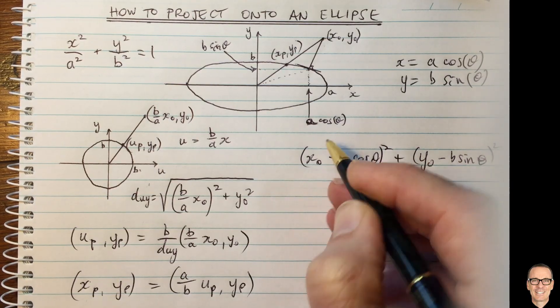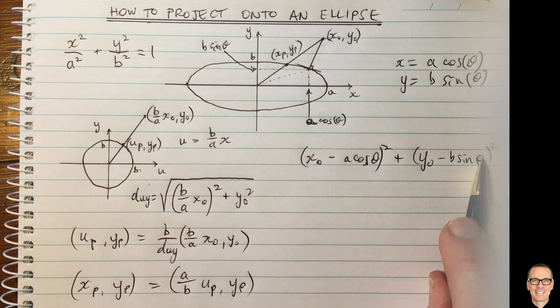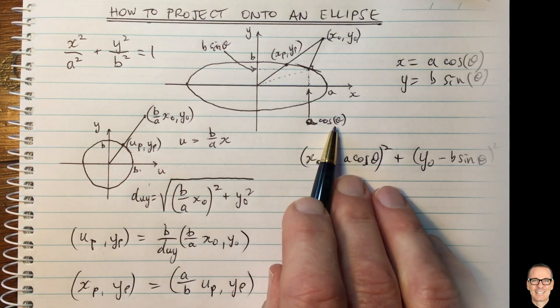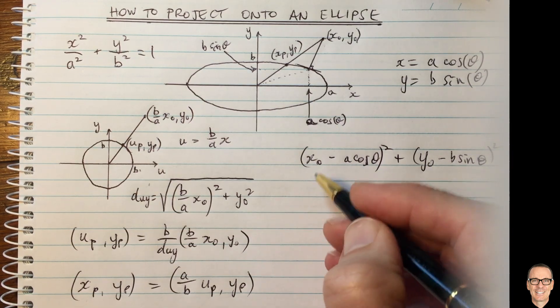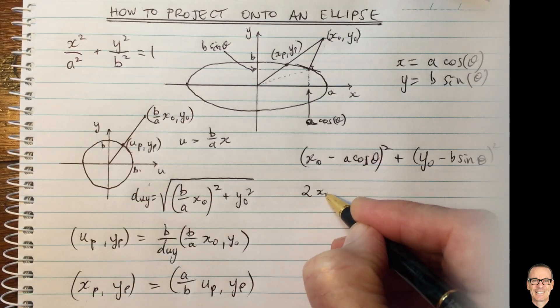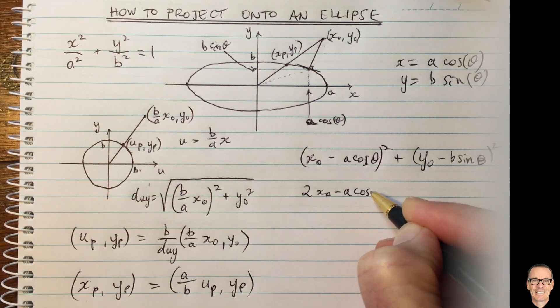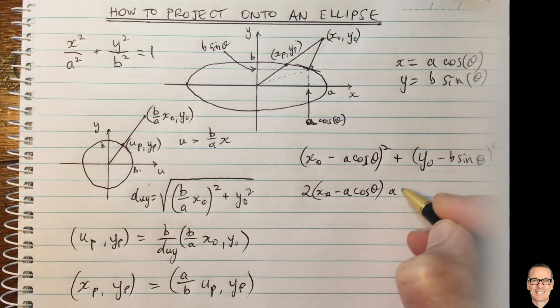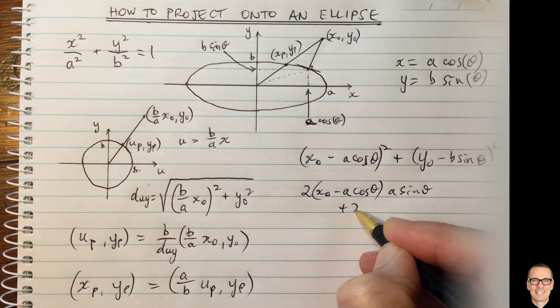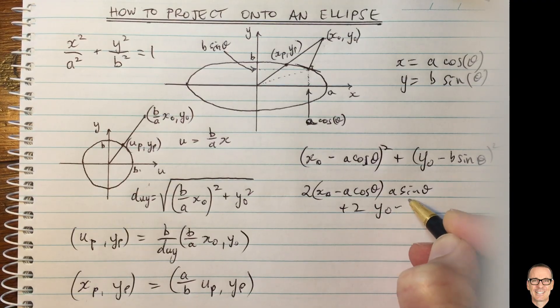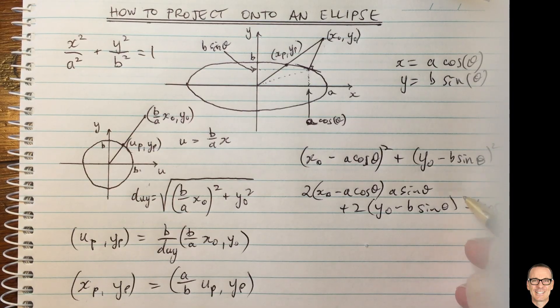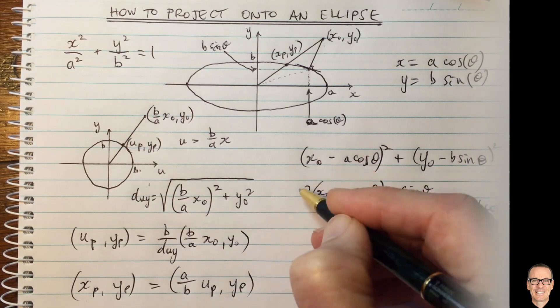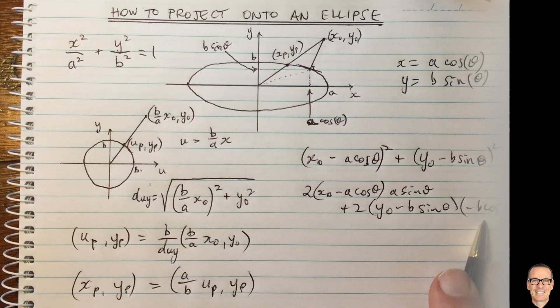Okay, so that's an expression for the squared distance. Now we're going to take the derivative of that with respect to theta to find the value of theta and we'll set that to zero. So the derivative gives us 2 x naught minus a cos theta times a sine theta, and then the derivative of this term gives you plus 2 y naught minus b sine theta times minus b cos theta.